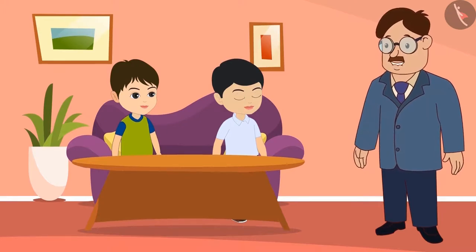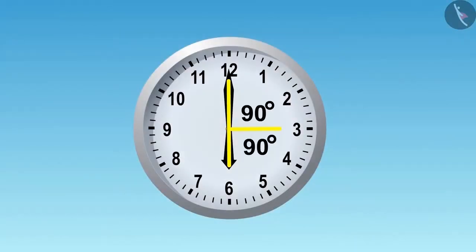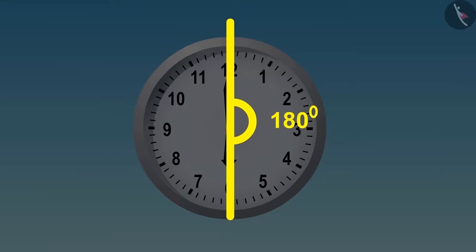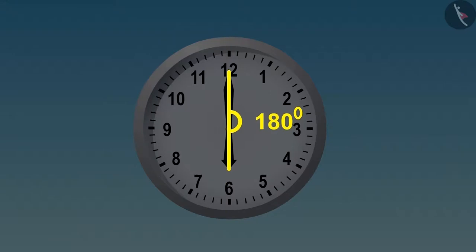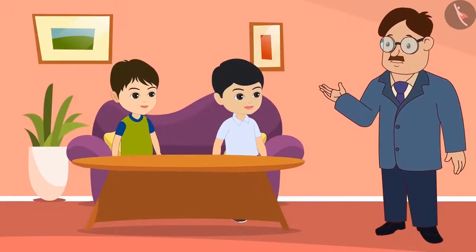Now look at this angle, children. This is double of ninety degrees, that is one hundred and eighty degrees angle. That means this angle is made by joining two ninety degrees? Yes, Golu.